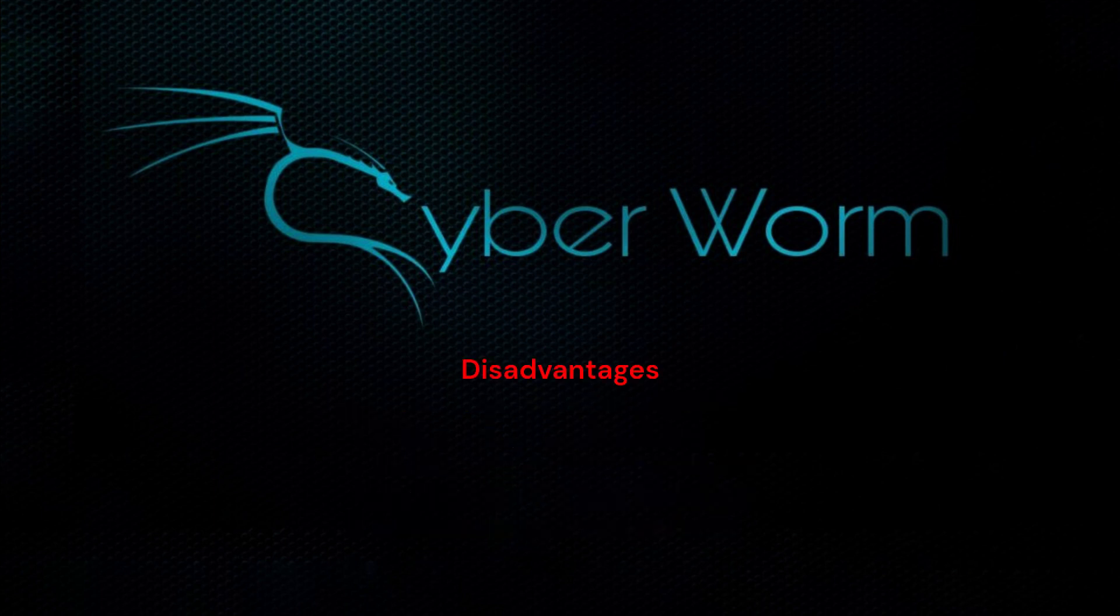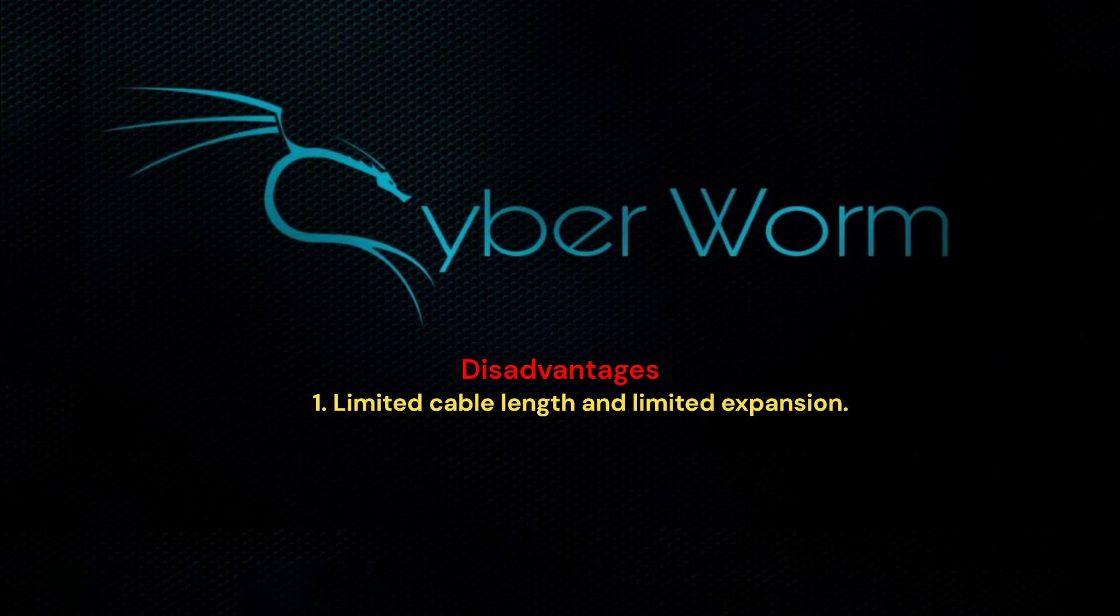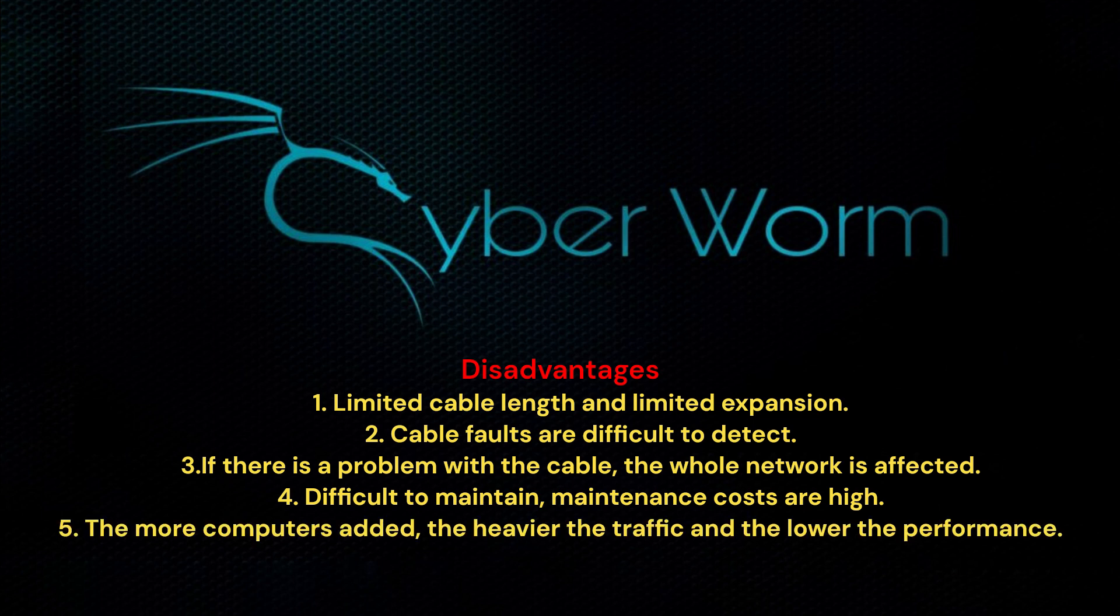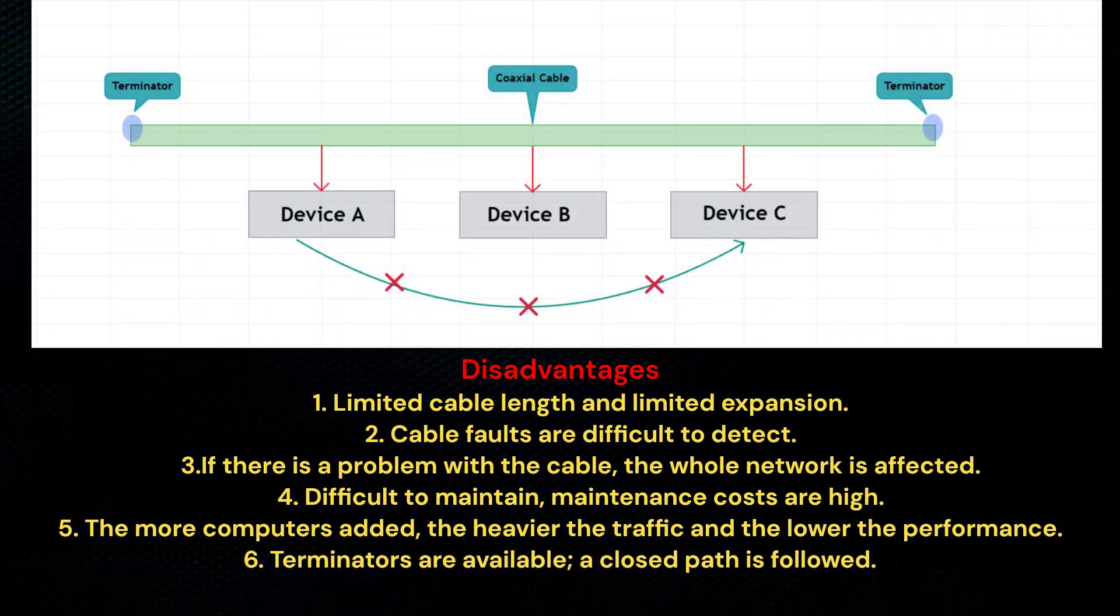Disadvantages: Limited cable length and limited expansion, number of stations. Cable faults are difficult to detect. If there is a problem with the cable, the whole network is affected. Difficult to maintain, maintenance costs are high. The more computers added, the heavier the traffic and the lower the performance. Terminators are available. A closed path is followed.